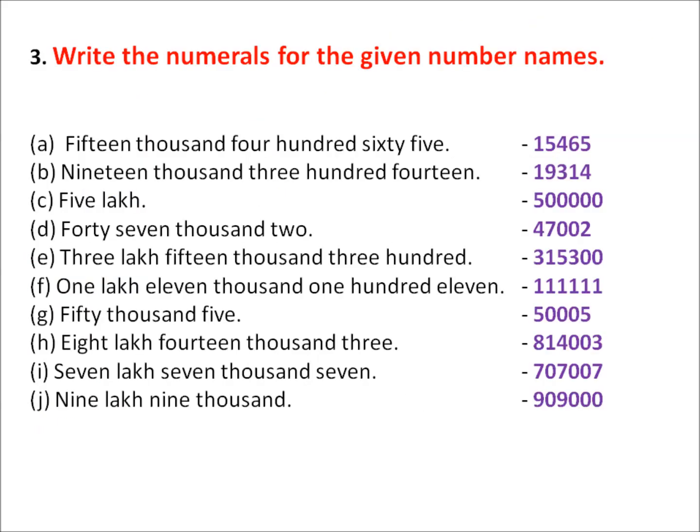Now, question number 3: Write the numerals for the given number names. Here, number names are given and you have to write the numeral. Question E is 15,465. The process is: first, write the place value of the numbers, and then insert the numerals according to the place value. Make a chart of 10,000, 1,000, 100s, 10s, 1s. 15,000 at the place of 10,000 and 1,000; 400 at the place of 100; and 65 at the place of 10s and 1s. In this way, complete the rest of the questions.